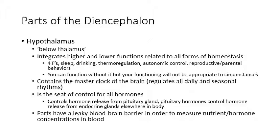The hypothalamus integrates almost any function that could influence homeostasis. It controls your body temperature, the secretion of hormones from the pituitary gland, drinking, eating, sleeping, your autonomic nervous system, and reproductive behaviors — from mating to raising children. You can get by without your hypothalamus, but not quite right. The brainstem is the primary source of control for the autonomic nervous system, but the hypothalamus is what allows the function of the brainstem to be coordinated with the function of the cerebrum, so the autonomic nervous system's activity is appropriate to whatever complex situation you're understanding using your cerebrum.